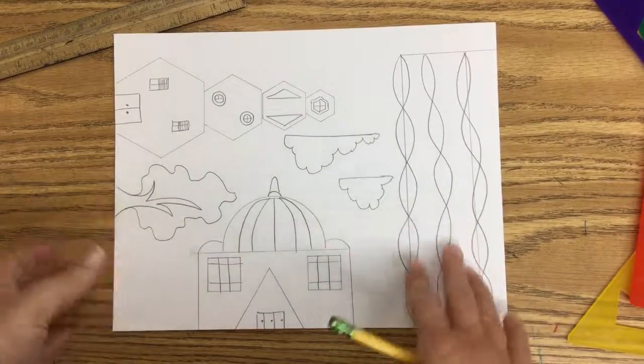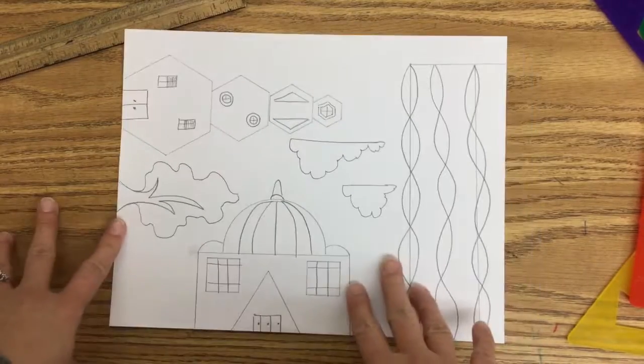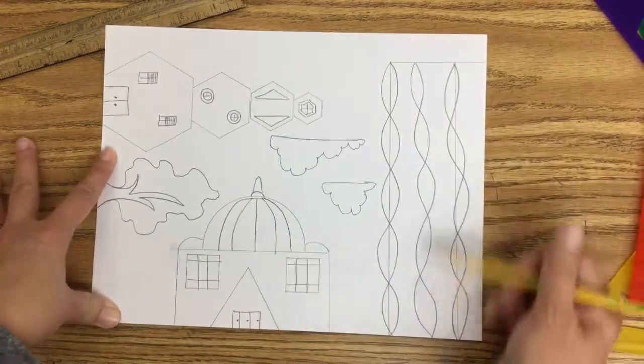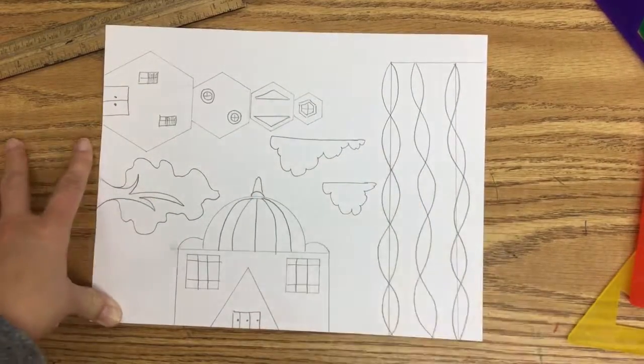If I want to add an extra building, I'm going to get another sheet of paper. Remember, make sure you're using the tag board or the index paper on these. As you can see, I have my organic building over here, some more of my geometric buildings, and then my organic natural shapes.